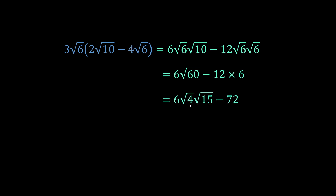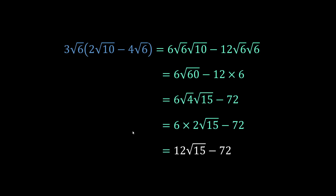Square root of 60 breaks down to square root of 4 times square root of 15. I pick 4 because it's a square number — not 20 times 3, since those don't break down with a square number. Square root of 4 becomes 2, so multiplying through gives us 12 root 15 minus 72.